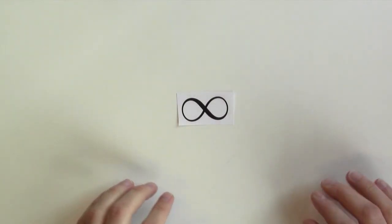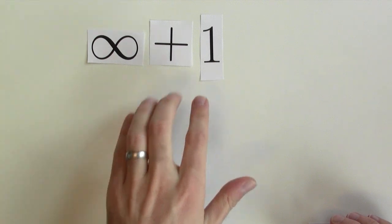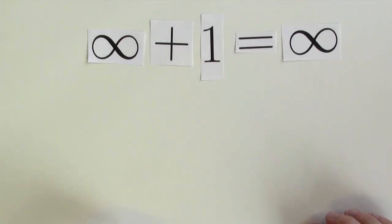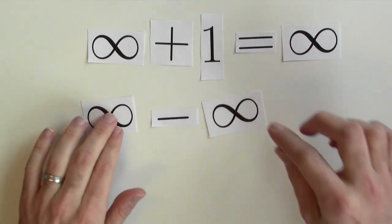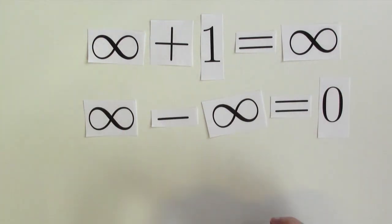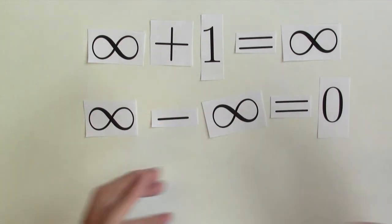Why am I freaking out about this? What's so bad about thinking of infinity as if it were some number? If you start trying to do arithmetic with infinity, you're liable to walk straight into a trap. Let's treat infinity as if it were a number. What's infinity plus 1? I've got infinitely many things and I add one more — that's the same as having infinitely many things. So infinity plus 1 equals infinity. And what would infinity minus infinity be? A number minus itself is 0. So you'd be believing both: infinity plus 1 is infinity, and infinity minus infinity equals 0.